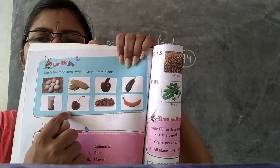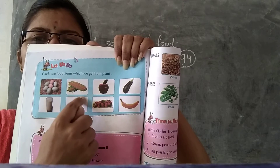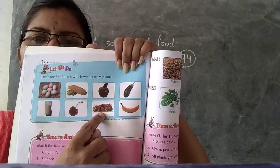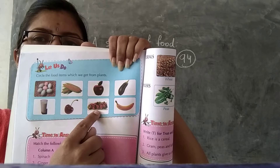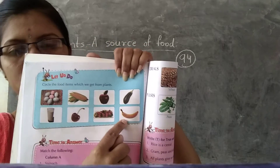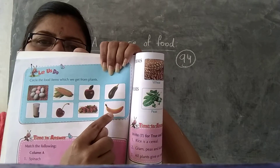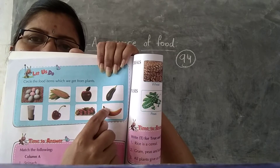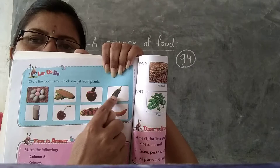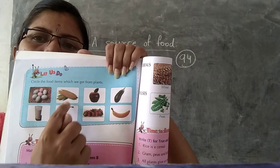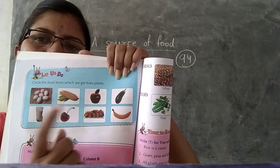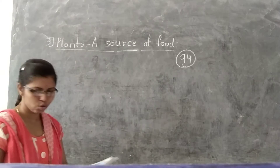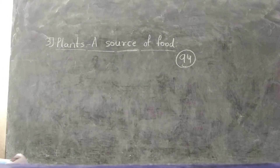Cherry — we get cherry from the plant, so circle it. Next is chicken; we do not get chicken from a plant. Next is banana — we get banana from a plant, so circle it. So banana, brinjal, apple, corn, and cherry — these all we get from plants, so circle those.